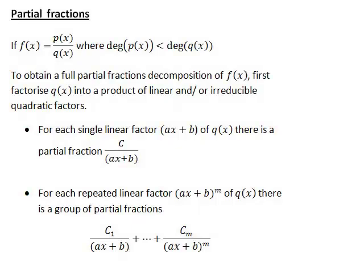In this recording we look at an initial example of obtaining a partial fractions decomposition of a proper rational function f of the form p(x) over q(x). That is, it is one polynomial divided by another, and by a proper rational function we mean that the degree of p(x), which is the highest power of x it contains, is less than the degree of q(x).